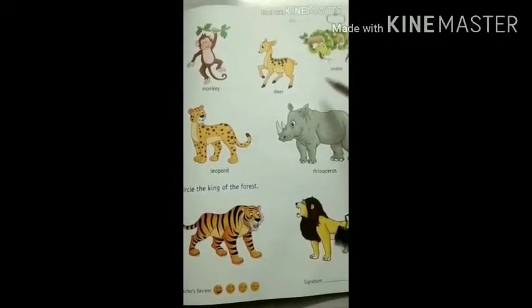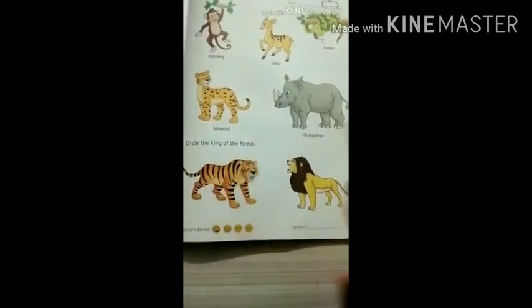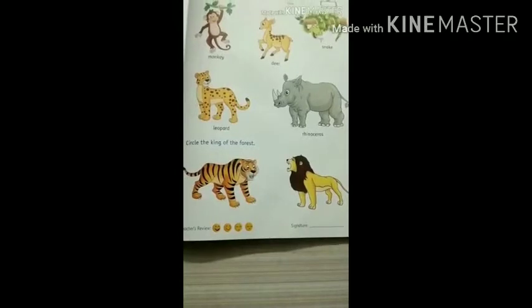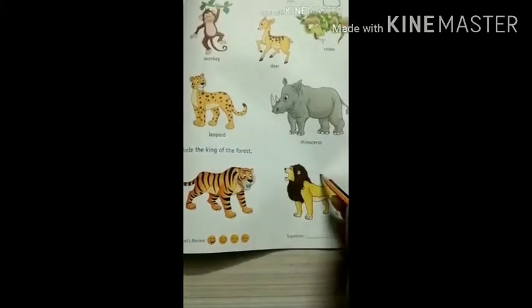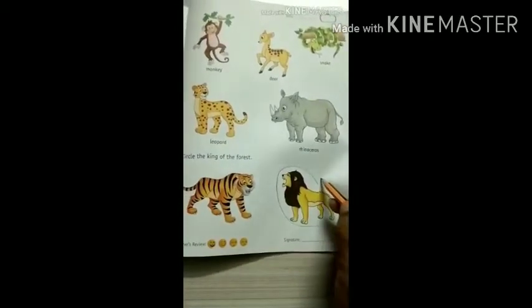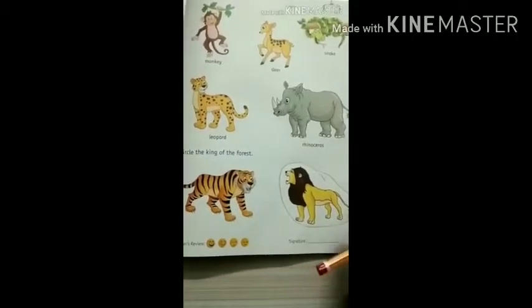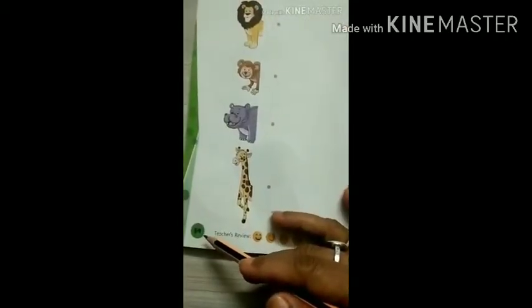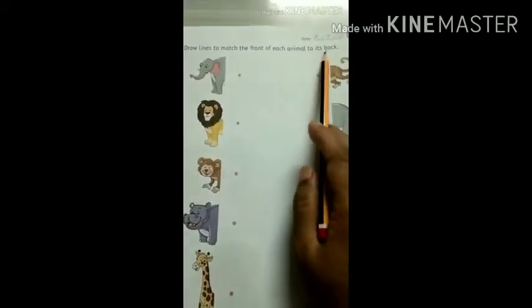They all live in the forest. Now see — circle the king of the forest. Who is the king of the forest? Can you tell me? Lion. A lion is the king of the forest. Now see on page number 54. There is a nice exercise for us: draw lines to match the front of each animal to its back.